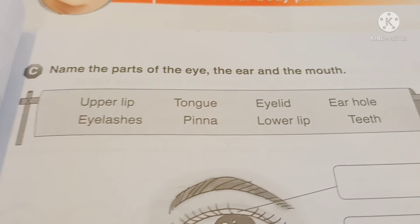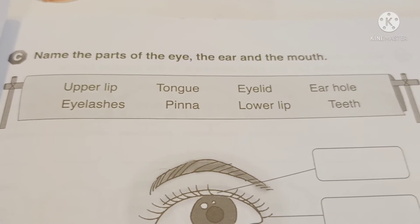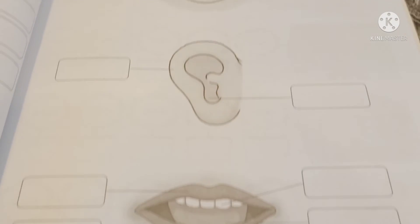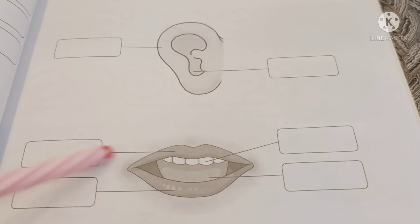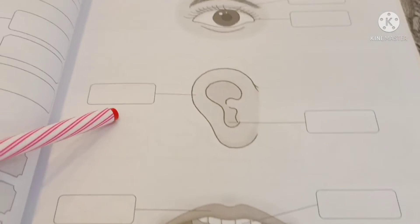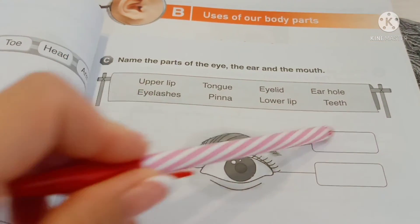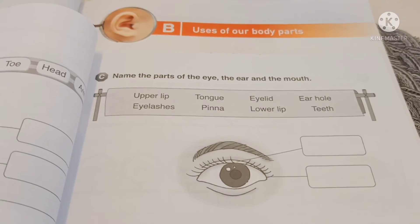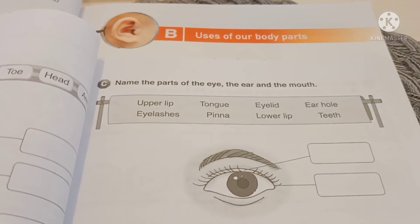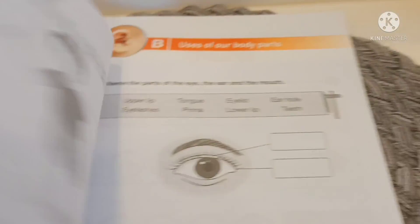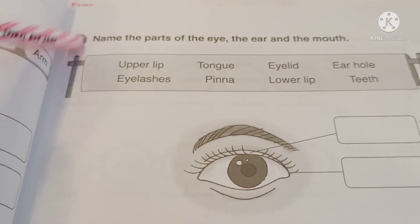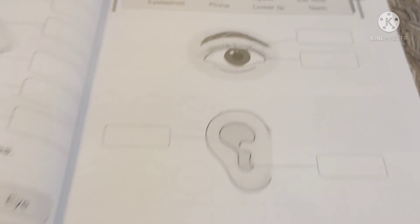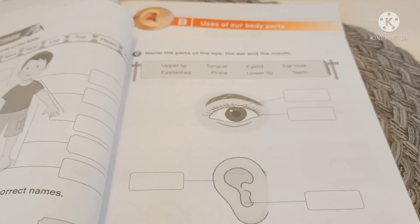So this is your homework — name the parts of the eye, the ear, and the mouth. Or you can draw and label these different parts. That's it for today. Remember, this is your workbook, page number 37, Exercise C — all of this page. Okay, see you next time. Bye-bye, kids!